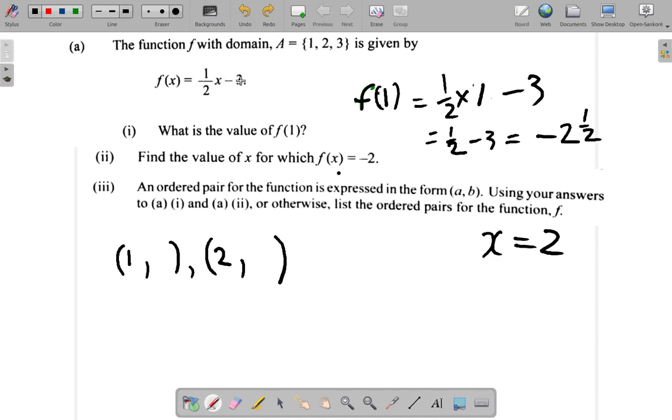Remember, half times 1 is half. Half minus 3 is negative 2 and a half. So it's negative 2 and a half, or you could put negative 2.5. I've had negative 2.2 here. You could put negative 2.5 here. Then the other one.